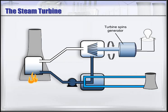The steam expands as it drives the blades, lowering its pressure and temperature. The lower-energy steam exiting the turbine is cooled using either water from a lake, ocean, or river, or evaporative cooling in a cooling tower.